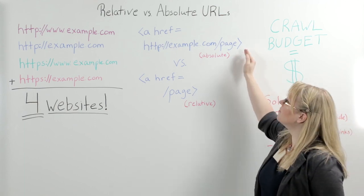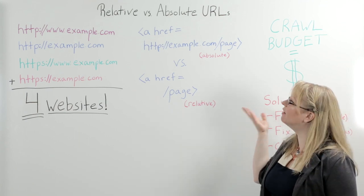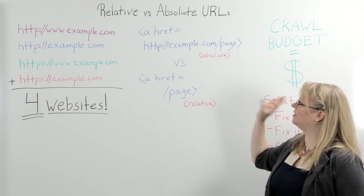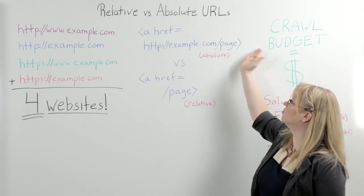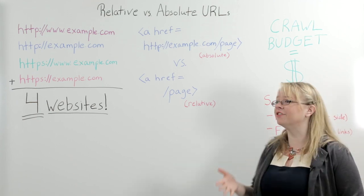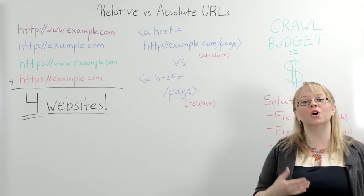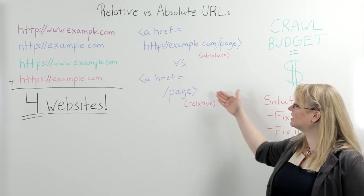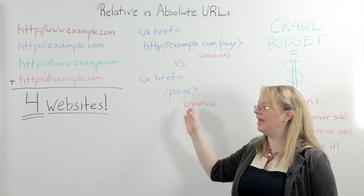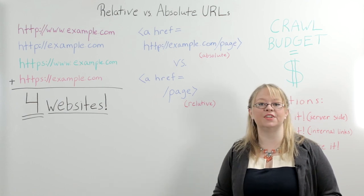With an absolute URL, you are putting the entire web address of the page that you are linking to in the link — your full domain, everything, including slash page. That's an absolute URL. However, when coding a website, it's a fairly common web development practice to instead code internal links with what's called a relative URL. A relative URL is just slash page.